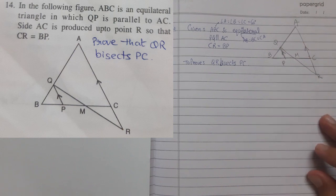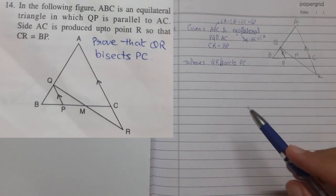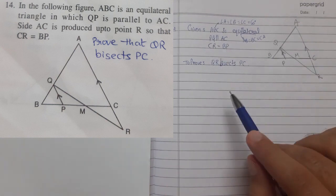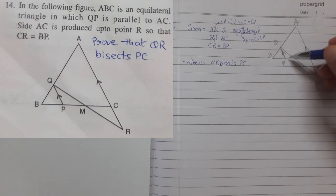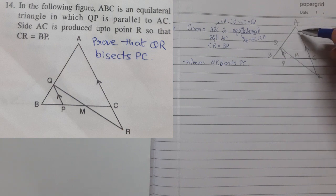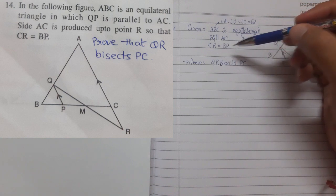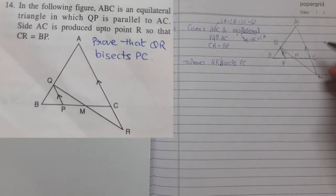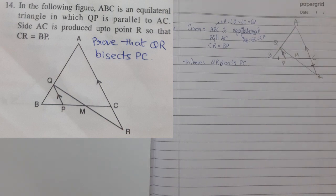No need to write everything out, but you must have this understanding. The second given is that PQ is parallel to AC. In the figure it was extended, so make sure: PQ is parallel to AC, and PQ is also parallel to AR, or you can say CR. You must have this understanding. Next, CR equals BP — this is given.